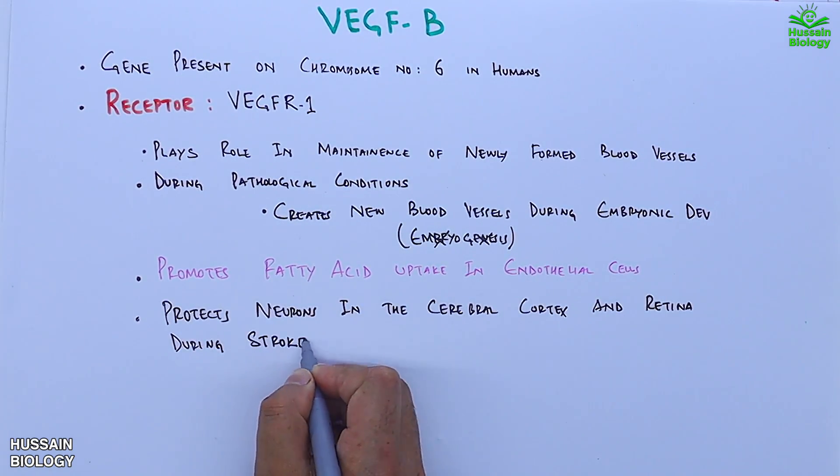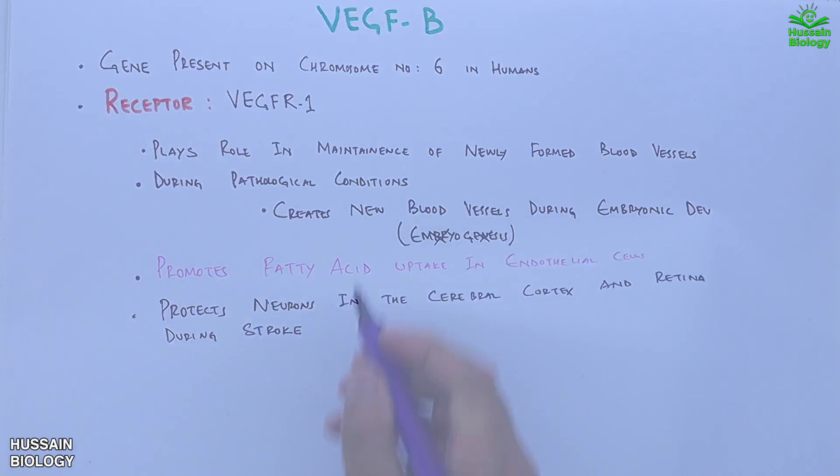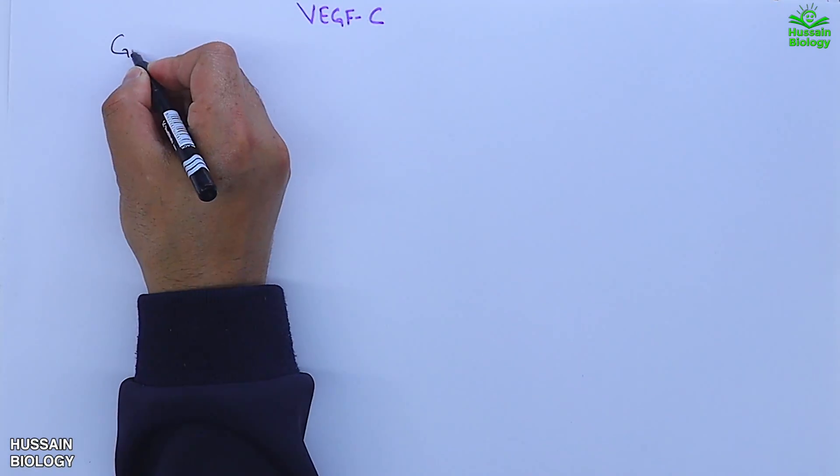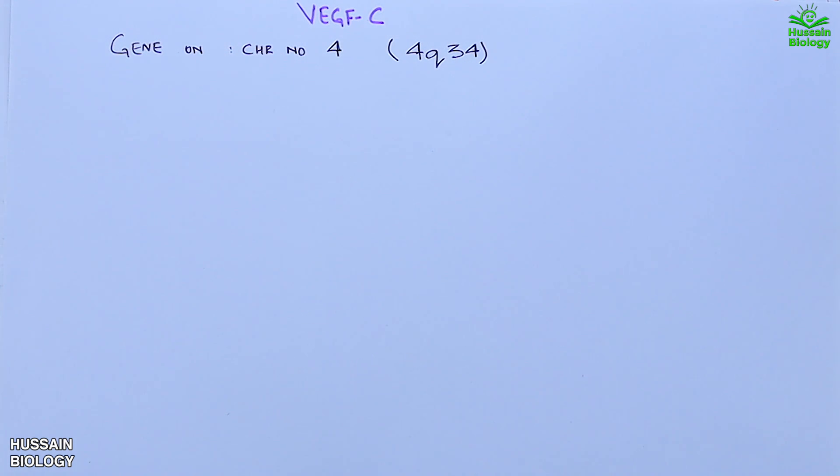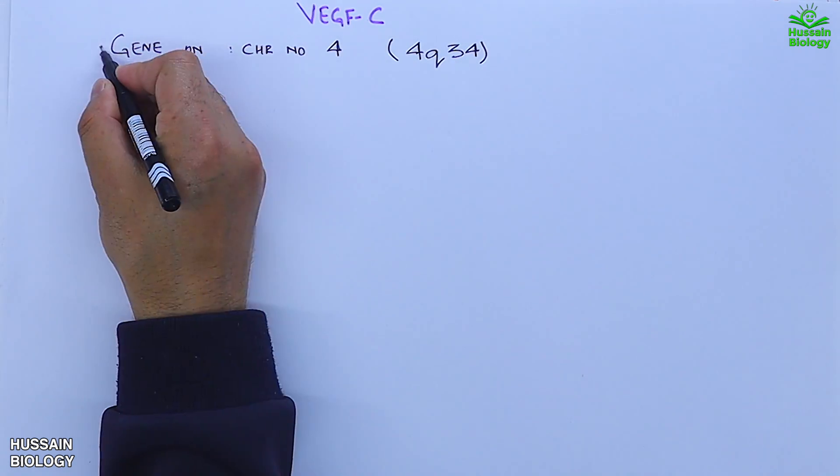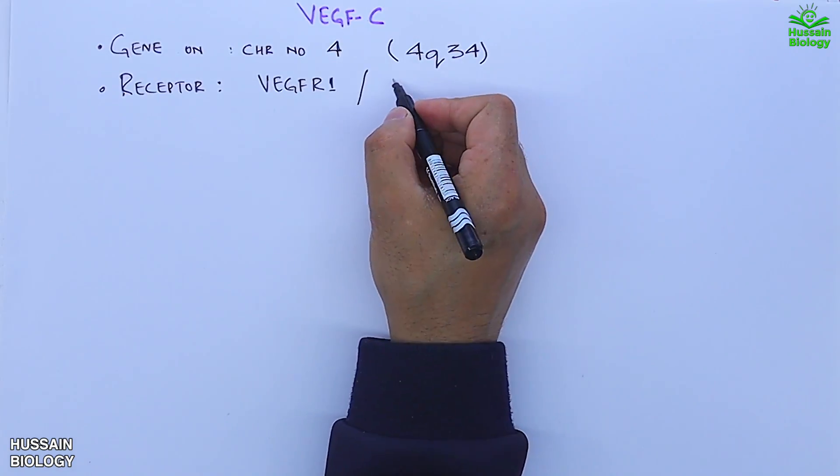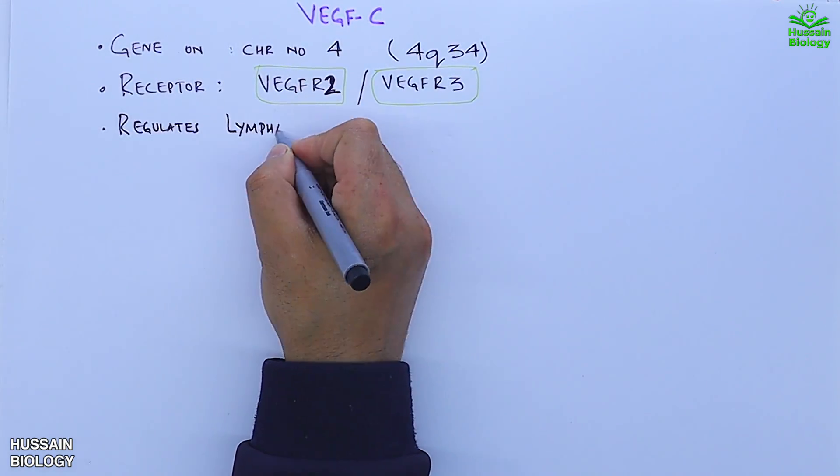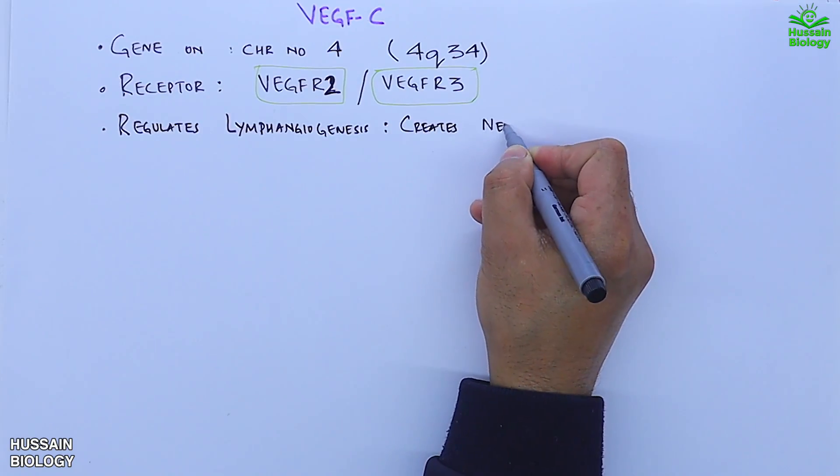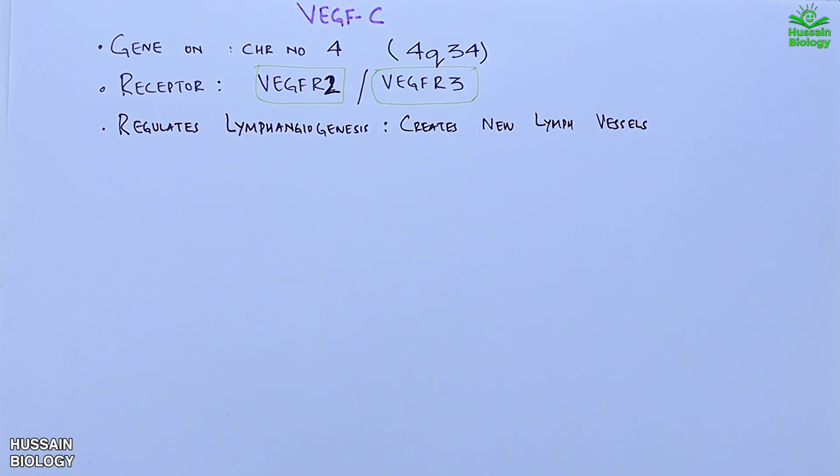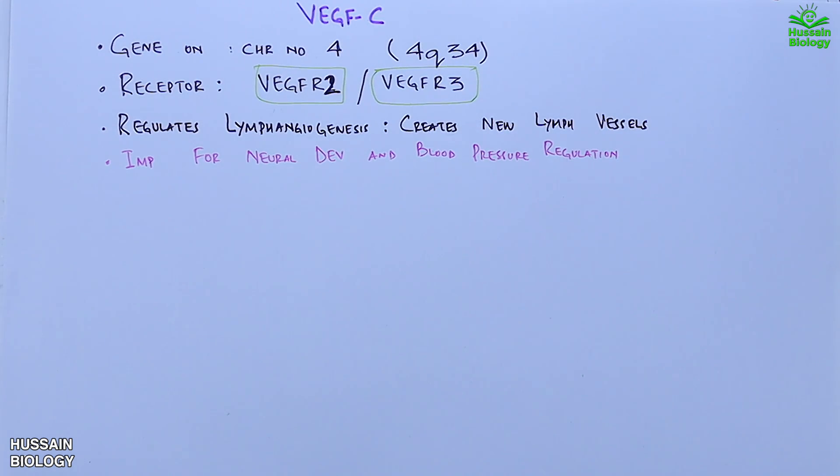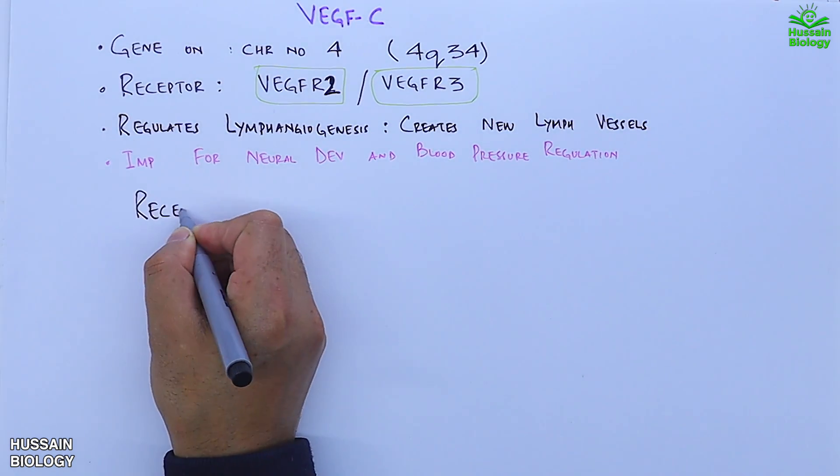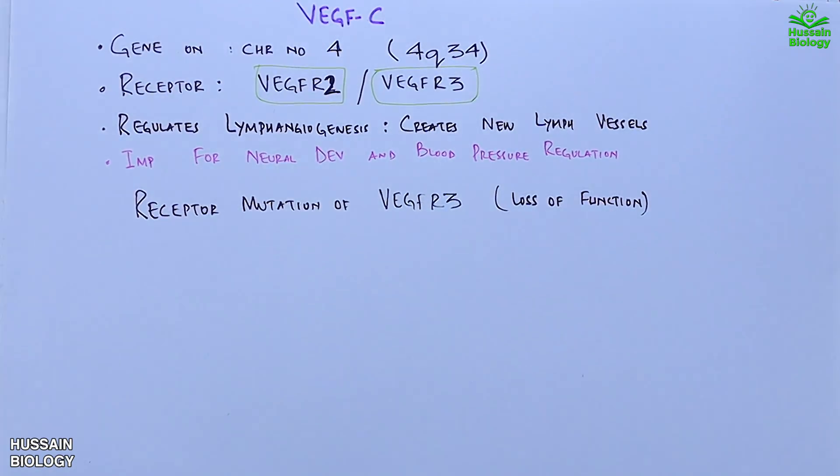VEGF-C's gene is present on chromosome number 4 at 4q34 position. It's received by receptors like VEGFR2 and VEGFR3. It regulates lymphangiogenesis where it creates new lymph vessels. This factor is important for neural development and blood pressure regulation. Receptor mutation of VEGFR3 protein leads to lymphedema, and increase in VEGF-C promotes cervical cancer metastasis by activation of FAK protein via FLT4-SRC pathway.